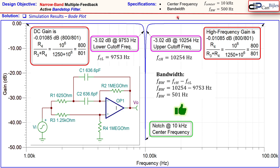In this example of a narrow-band multiple feedback active band stop filter, we calculated component values using design equations and verified them in SPICE simulations. If you have any questions or comments, please let me know. Don't forget to like and share these videos so we can reach more people for these interesting topics. Thanks for your cooperation, and see you next time!